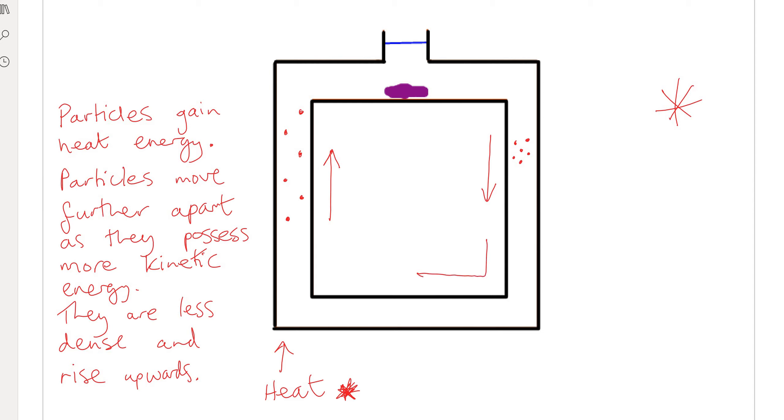They are closer together, they are more dense, and so drop. And so what we get is something called a convection current. In this case, the convection current will be clockwise. Complete the paragraph for the cooler, denser water particles on this side.